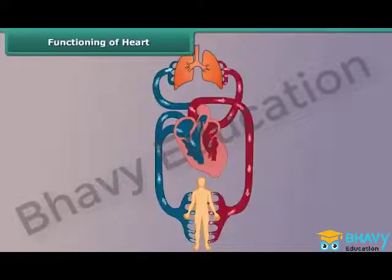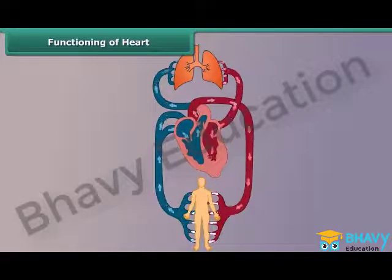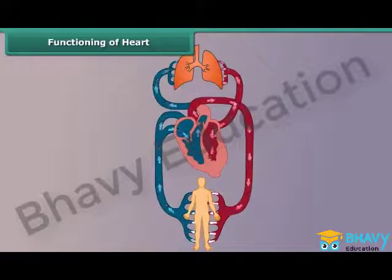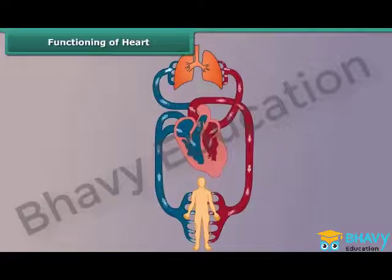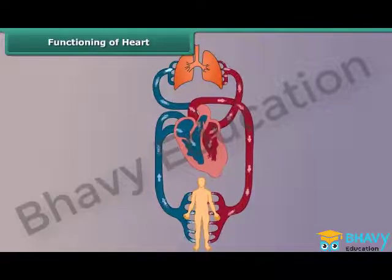The right side of the heart pumps deoxygenated blood received from the other parts of the body into the lungs for purification. The left side of the heart pumps oxygenated blood received from the lungs to the rest of the body.